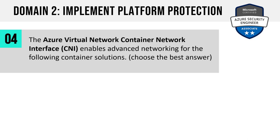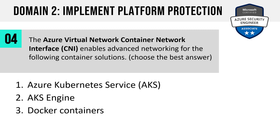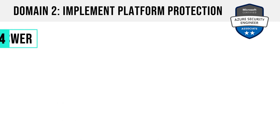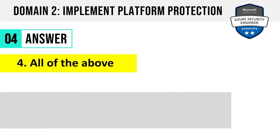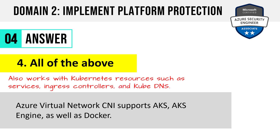Number 4. The Azure Virtual Network Container Network Interface or CNI enables advanced networking for which container solutions? Azure Kubernetes Service, AKS Engine, Docker Containers, or all of the above? You're definitely going to see quite a bit of coverage of Kubernetes on this exam. The answer is all of the above. Azure Virtual Network CNI supports Azure Kubernetes Service, AKS Engine, as well as Docker. It also works with Kubernetes resources like services, ingress controllers, and kubedns. The CNI installs in an Azure VM and assigns an IP address to every pod, and a pod can consist of one or more containers.